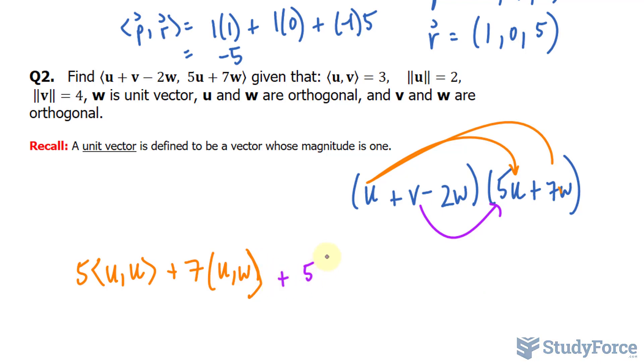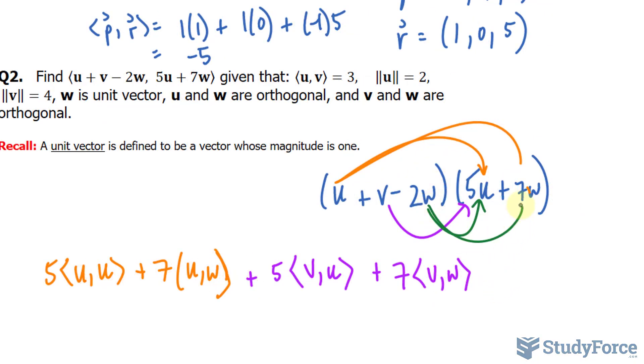Plus 5v and u. Plus 7v and w. And lastly, this one with these two: minus 10wu minus 14ww.